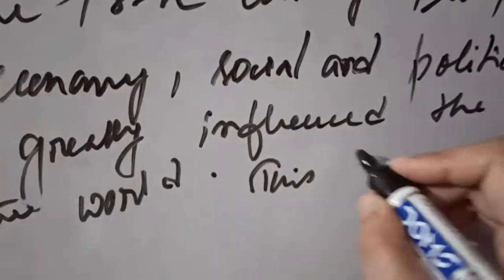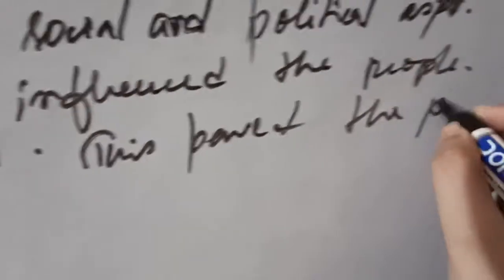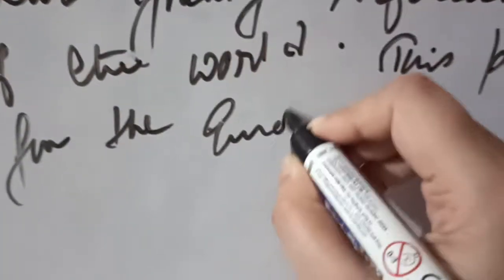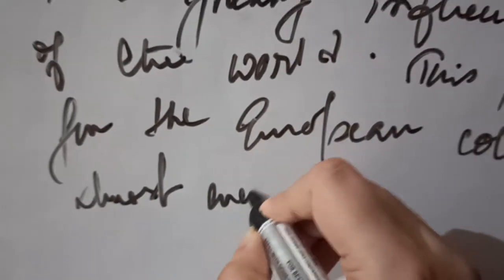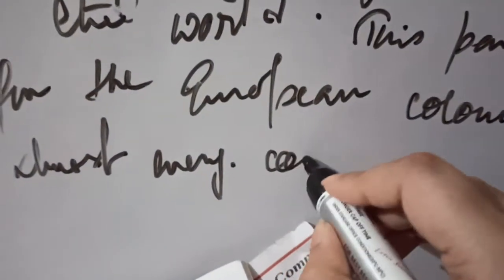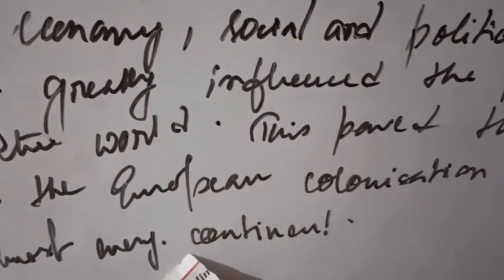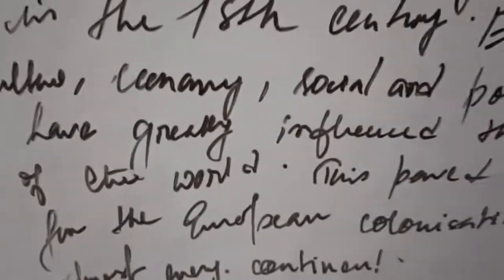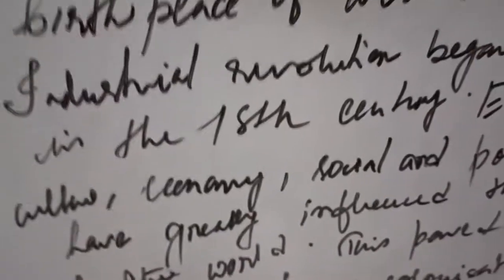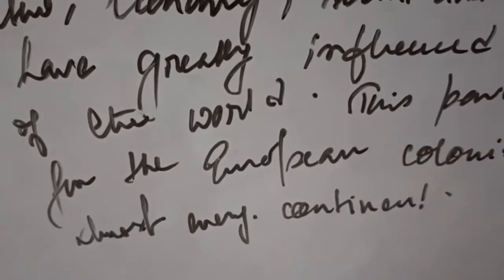This also paved the path for European colonization. Colonization means most of the European countries set up their own colonies in most of the continents of the world. For example, the British came to India, and the Spanish and French had colonies in the American portion. In this way, colonization spread to every continent.